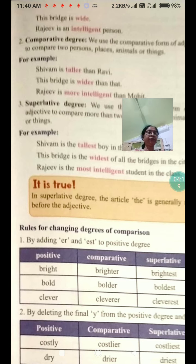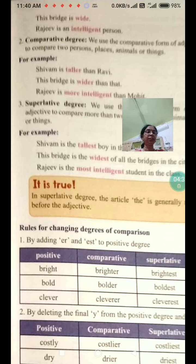Comparative degree. We use the comparative form of an adjective to compare two persons, places, animals or things. For example: 'Shibam is taller than that.' 'Rajiv is more intelligent than Mohit.'